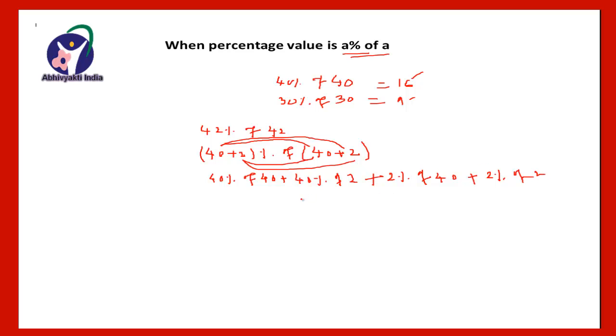Now solve this. Have a practice to do these all things orally. That 40% of 40, it will be 16, plus 40% of 2, that will be 0.80, plus 2% of 40, again it will be 0.80, plus 2% of 2, that will be 0.04. And if you add all these, means you have to write this step directly and then add it, so it will be 17.64.